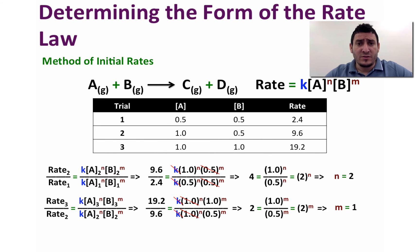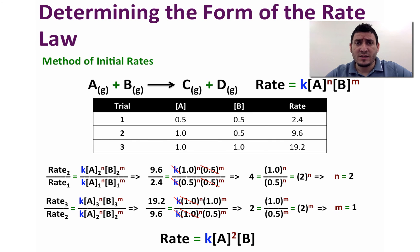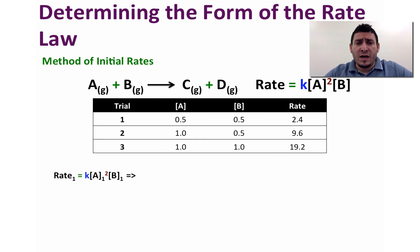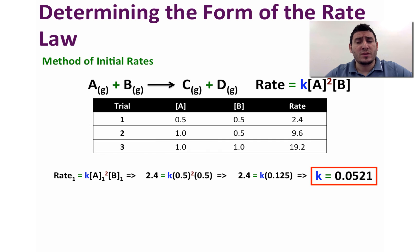The differential rate law is therefore: rate equals K multiplied by the concentration of A to the power 2, multiplied by the concentration of B to the power 1 (which we do not indicate in the expression). To calculate K, we take the values from any trial — for example trial 1 — and substitute in: 2.4 equals K multiplied by 0.5 squared multiplied by 0.5. Rearranging gives K equal to 19.2.